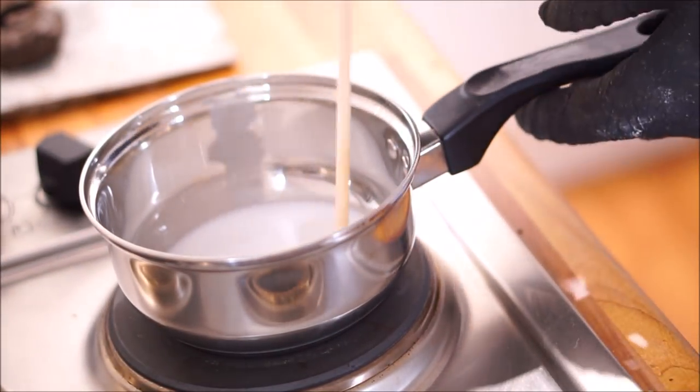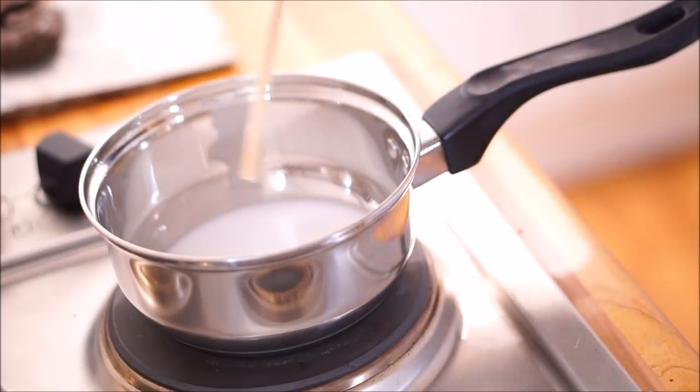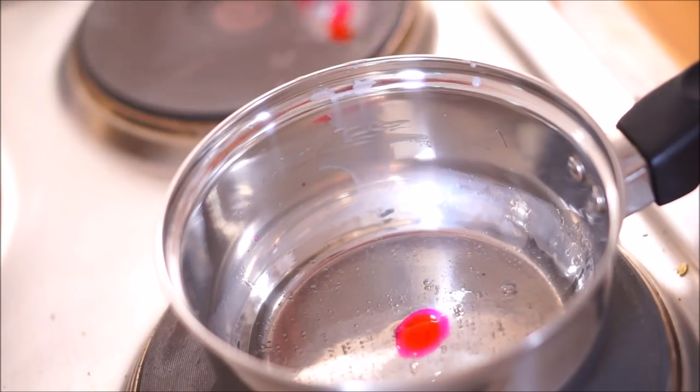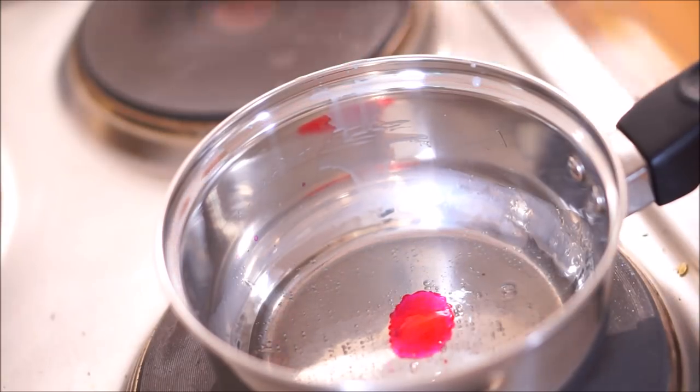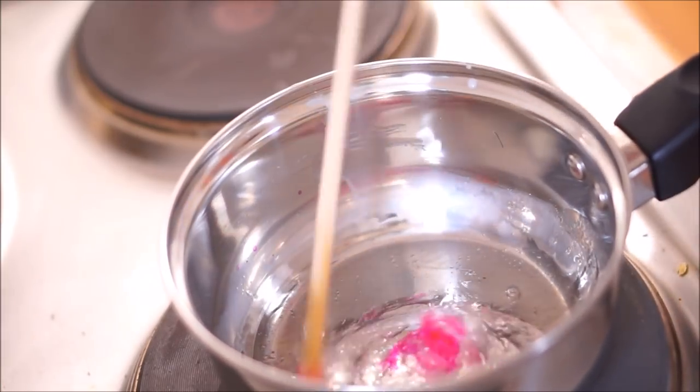I went to the fishing shop and they had this plastic stuff to make your own fishing bait. Basically it's a plastic that you heat up and it comes out like milk to begin with, and then you just keep stirring it and it eventually goes clear.